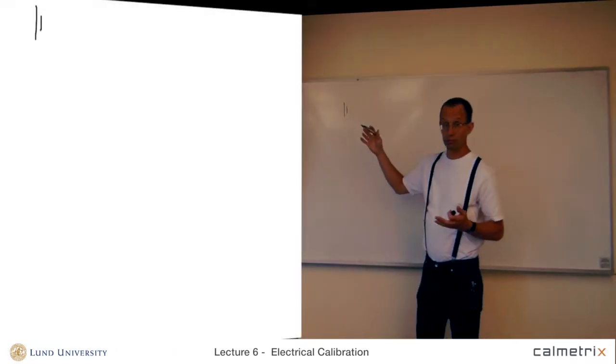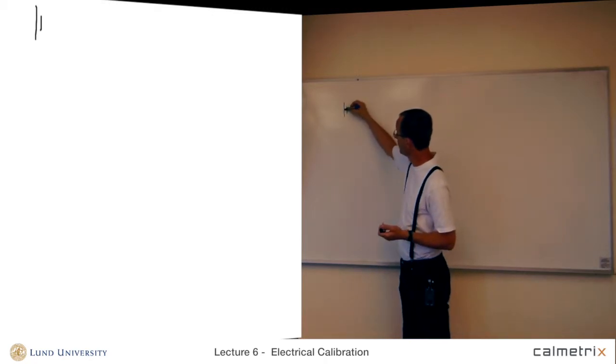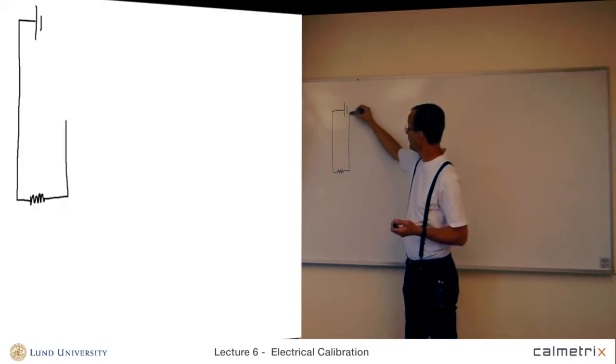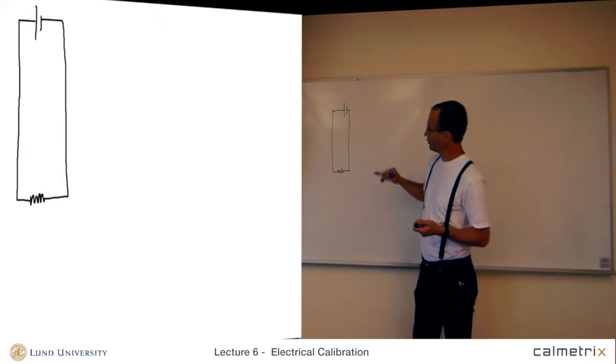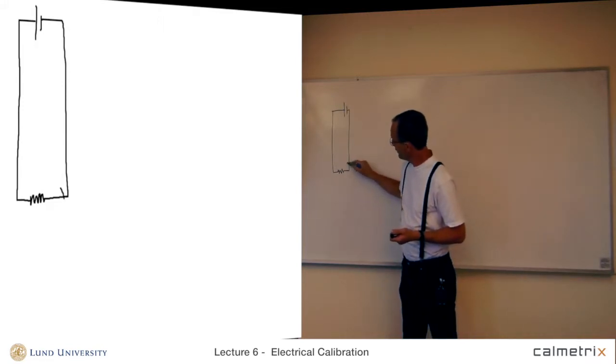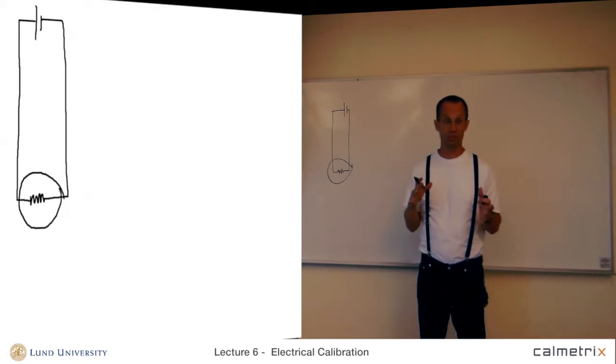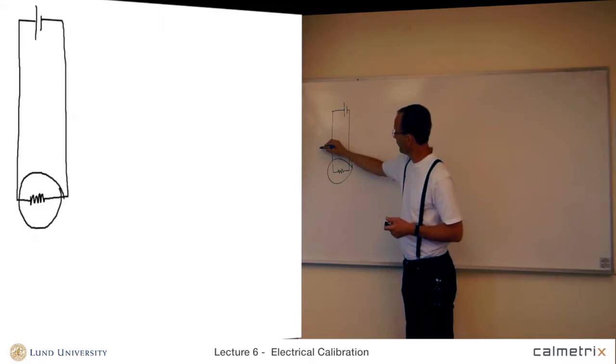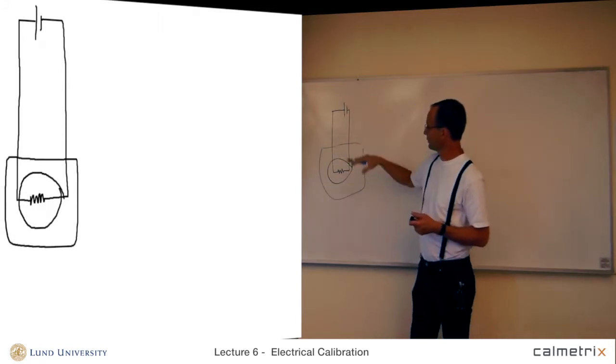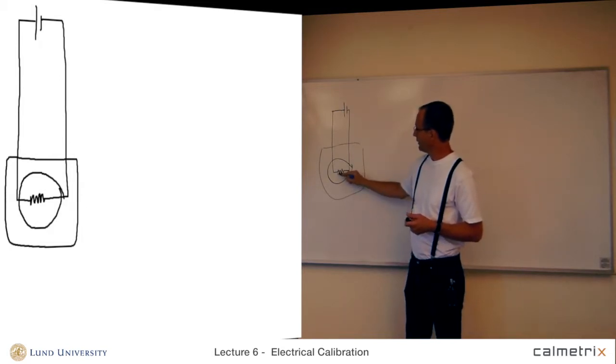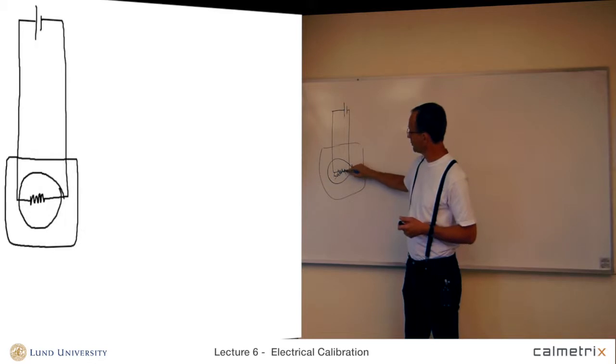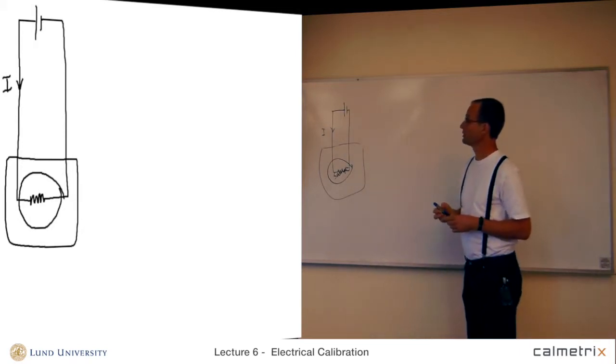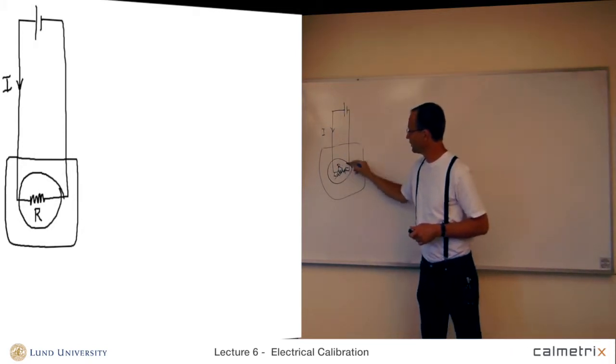We have a voltage source, the battery or a voltage source outside the calorimeter. Then we have leads going into the calorimeter and inside the calorimeter we have a heater and going back to the voltage source again. So, this is inside the calorimeter on the sample side. This is the thermostated environment. There we have the voltage source outside and the heater close to the sample. The current, which is i here, is measured and we know the resistance of the heater.